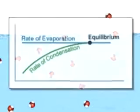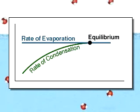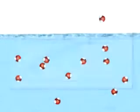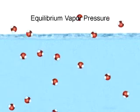Equilibrium is reached when the rate of condensation becomes equal to the rate of evaporation. The number of vapor molecules remains constant hereafter, and the pressure they exert is called the equilibrium vapor pressure.